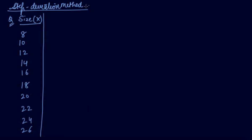Now we will study the shortcut method. In the shortcut method, when we find the mean, we take an assumed mean. So here we will take deviation from the assumed mean — not the actual mean, but the assumed mean. Then we find the square of the deviation.